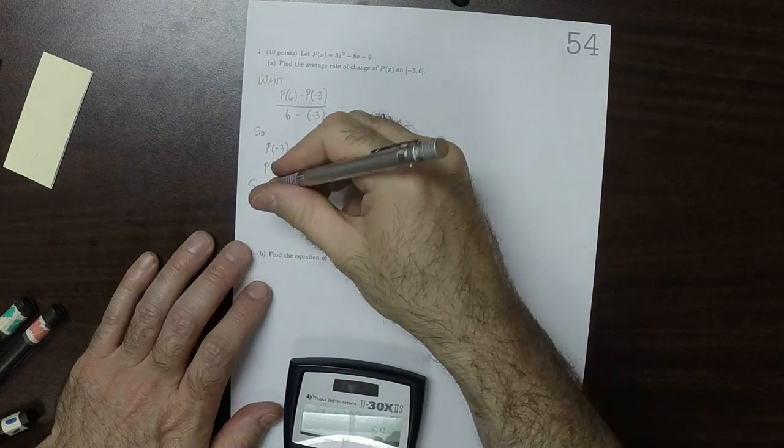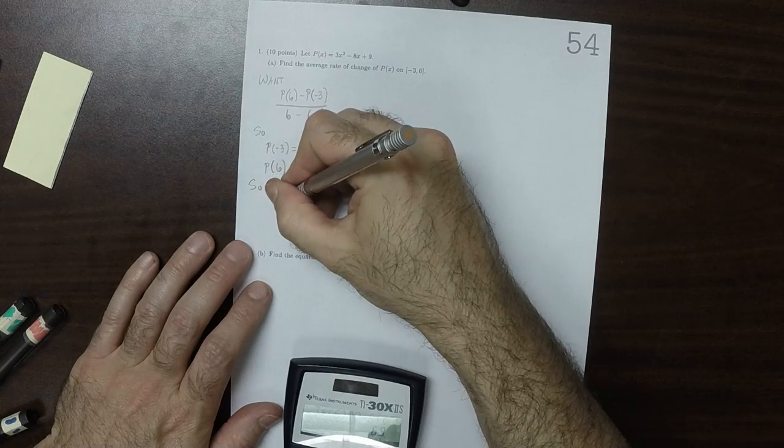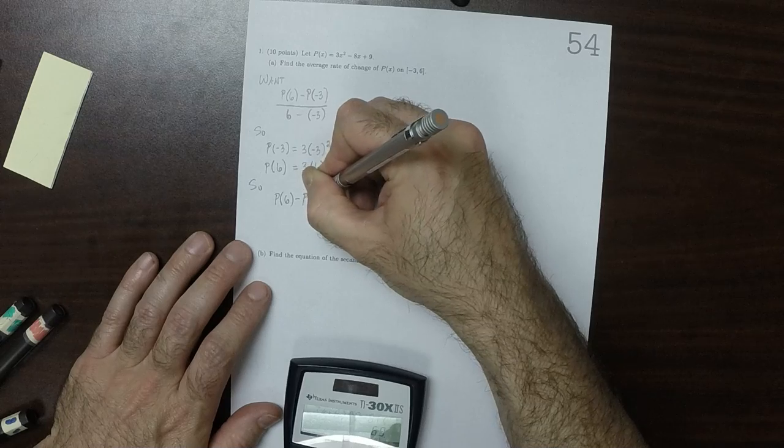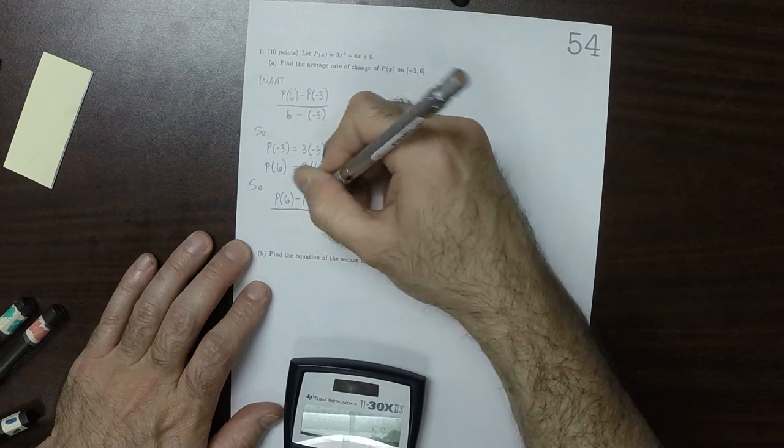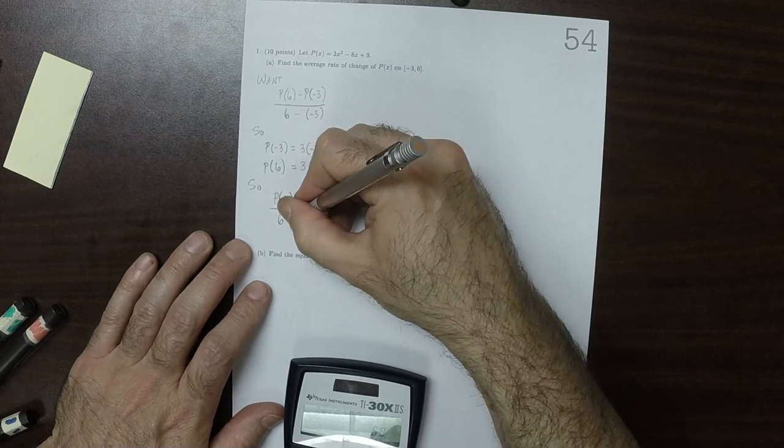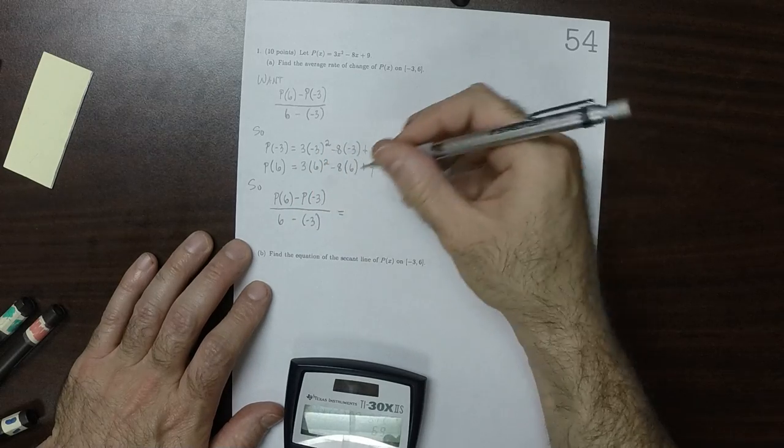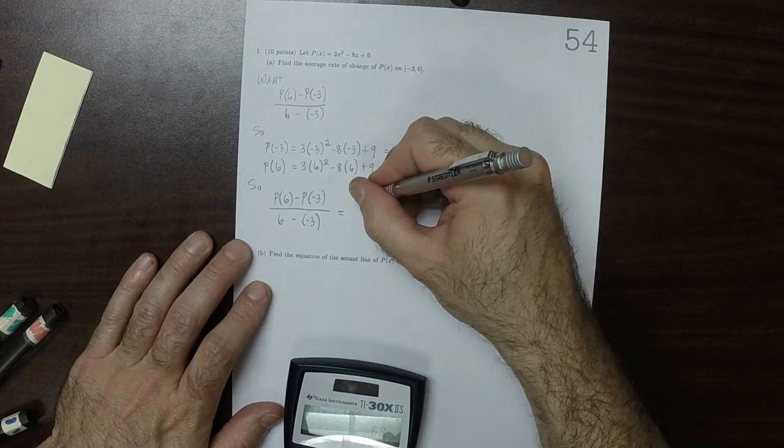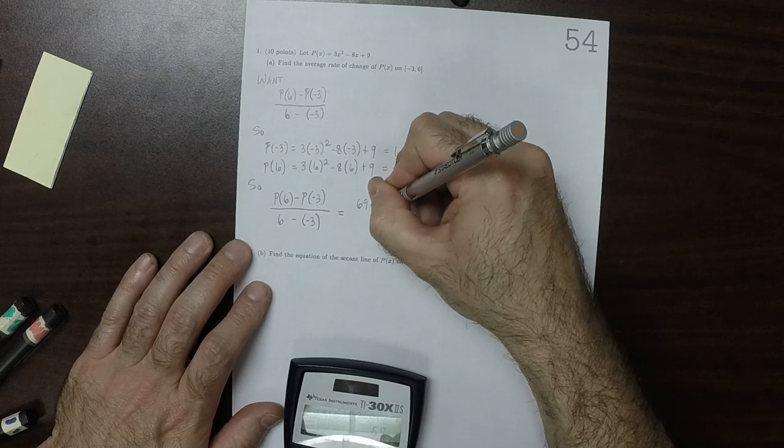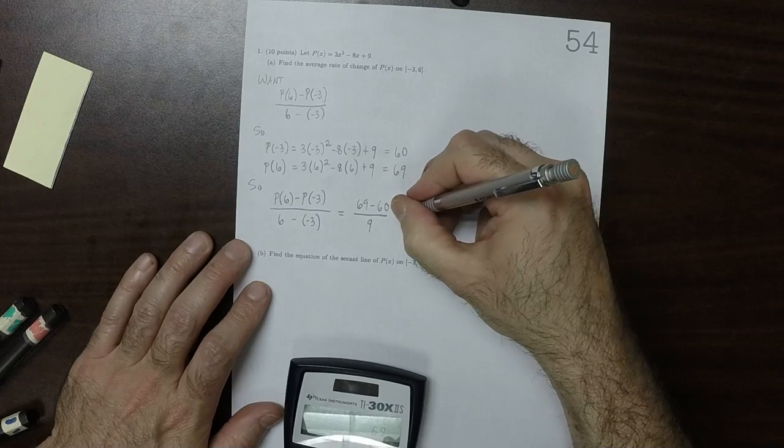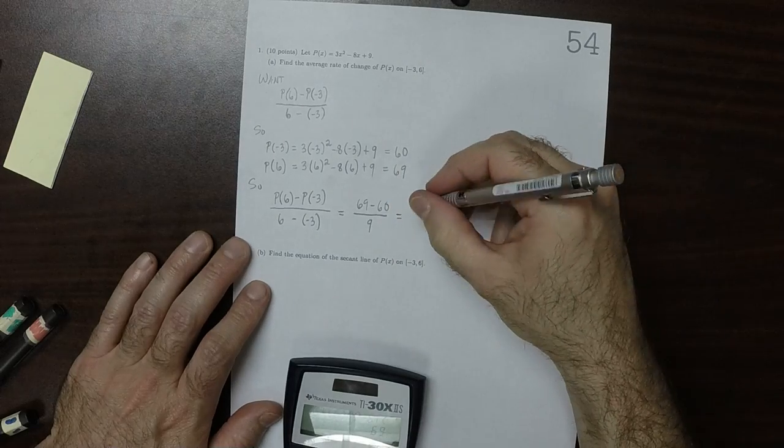So the answer that we're looking for, p evaluated at 6 minus p evaluated at negative 3 over 6 minus negative 3, is 69 minus 60 over 9, which is equal to 1.